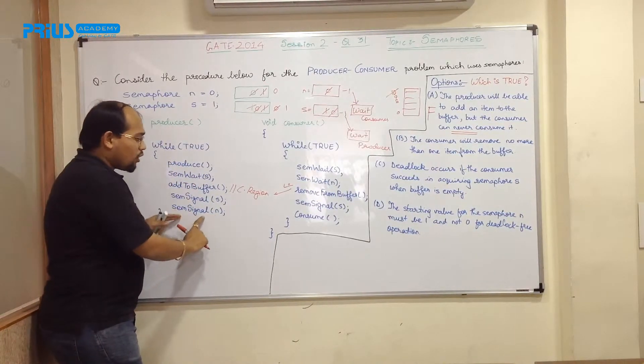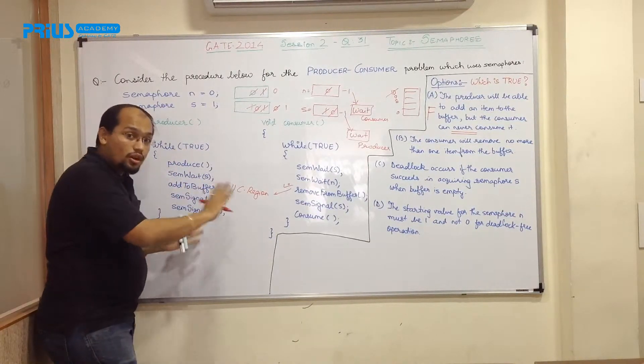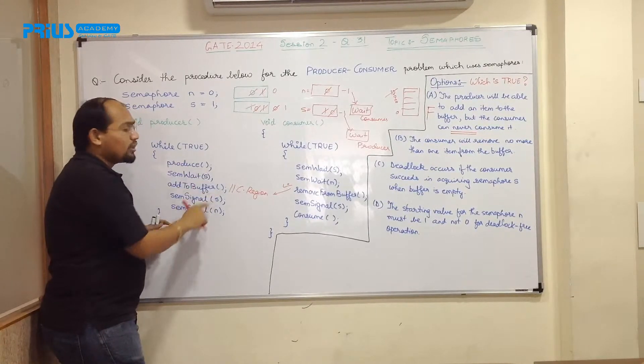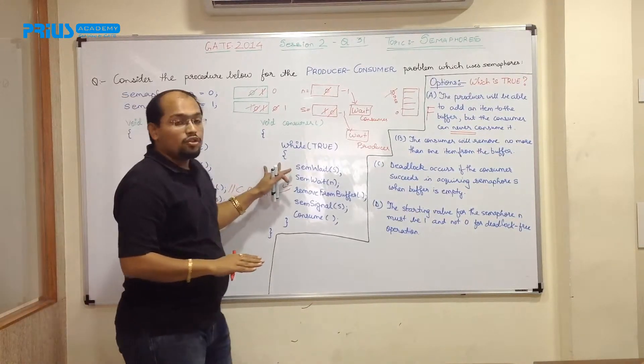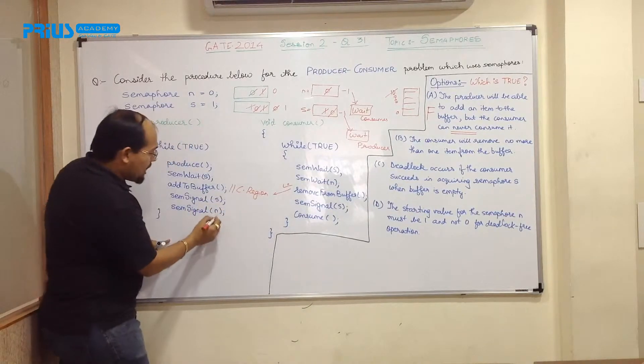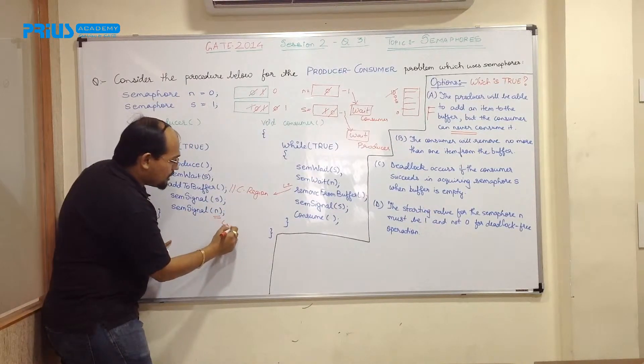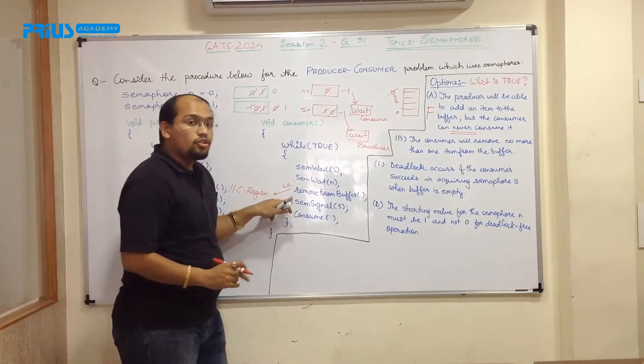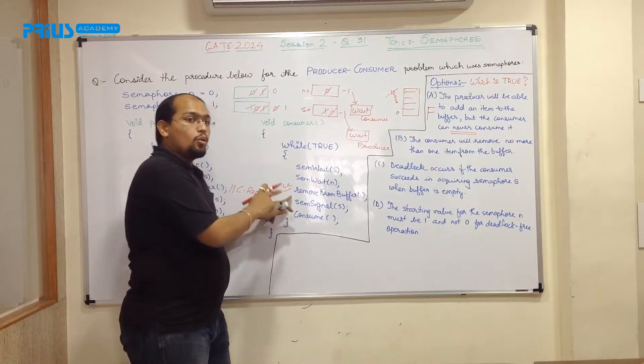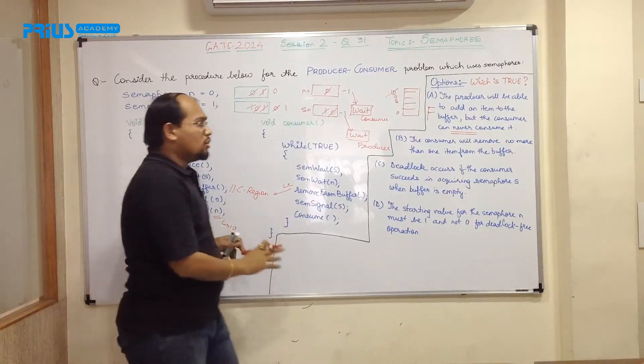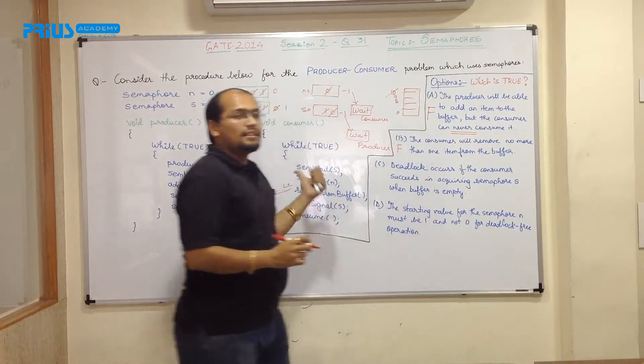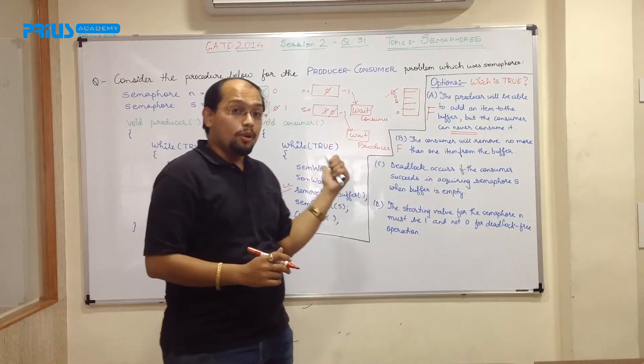So your n value, it is always incremented over here, it is not decremented. That means producer can produce n number of items. Whereas consumer, if assuming that if n value is 10 over here, that means consumer can consume all those 10 items without any issue. So again, this becomes false.